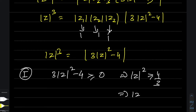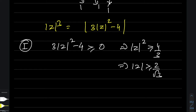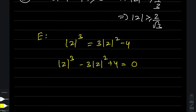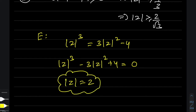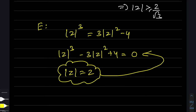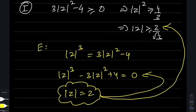Case 1: If (3|z|² - 4) is already positive, meaning |z|² ≥ 4/3, i.e., |z| ≥ 2/√3, the expression becomes |z|³ = 3|z|² - 4. Treating this as a cubic equation in |z|, one value that satisfies it is |z| = 2. Checking: 2³ - 3·(2²) + 4 = 8 - 12 + 4 = 0. And |z| = 2 also satisfies |z| ≥ 2/√3, so it is an accepted solution.